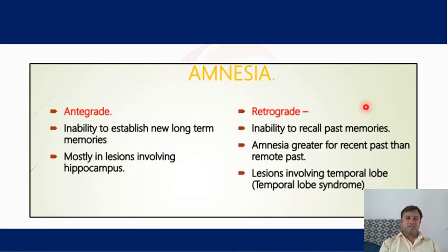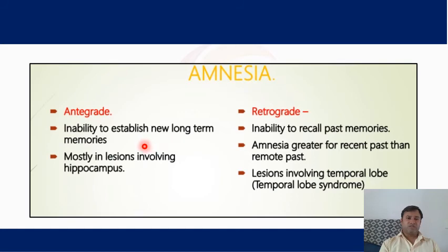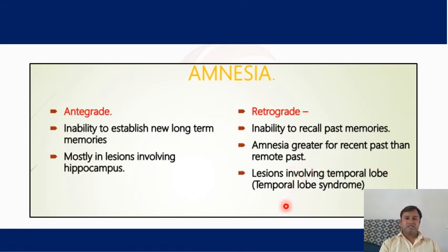There is a disease of memory called amnesia, which is of two types: anterograde and retrograde amnesia. Anterograde amnesia involves the inability to establish new long-term memories and is mostly associated with lesions involving the hippocampus. Retrograde amnesia is the inability to recall past memories, with greater impairment for recent past than remote past, and involves lesions of the temporal lobe of the cerebral cortex.